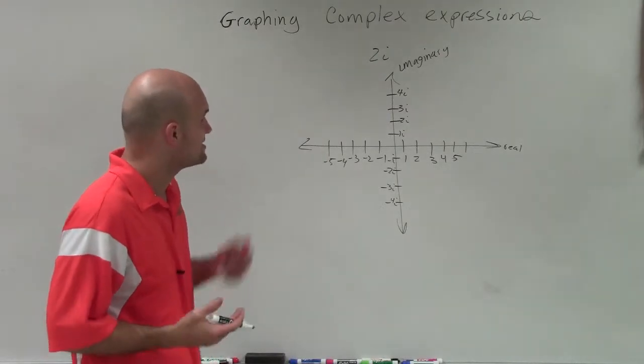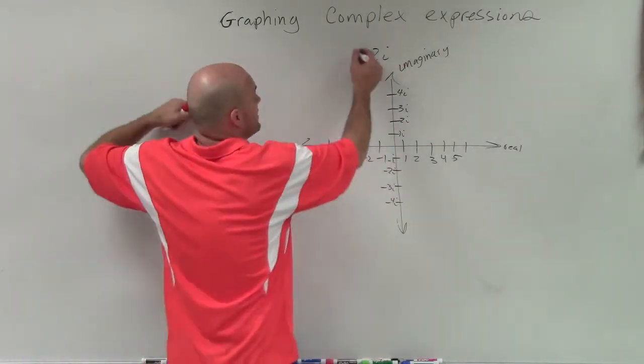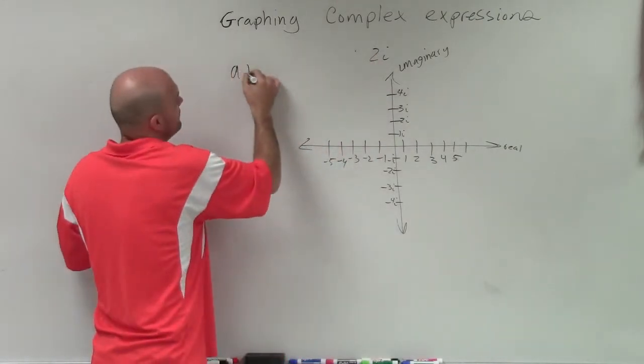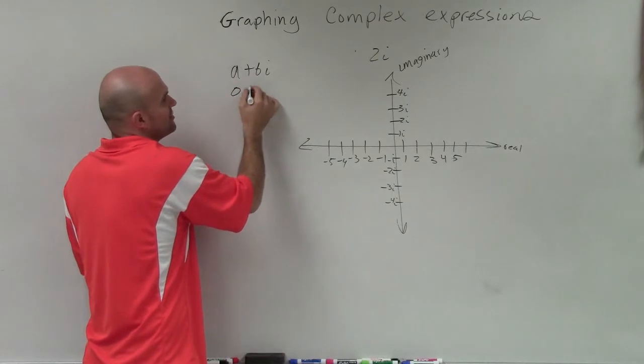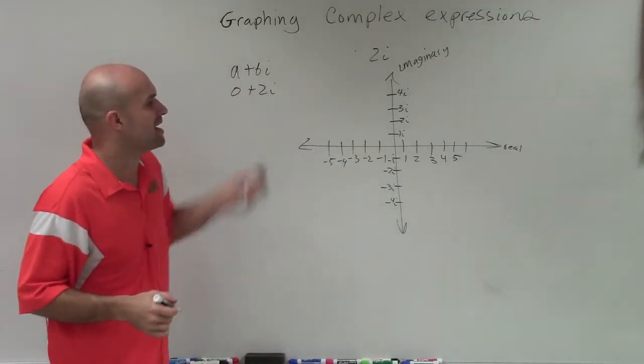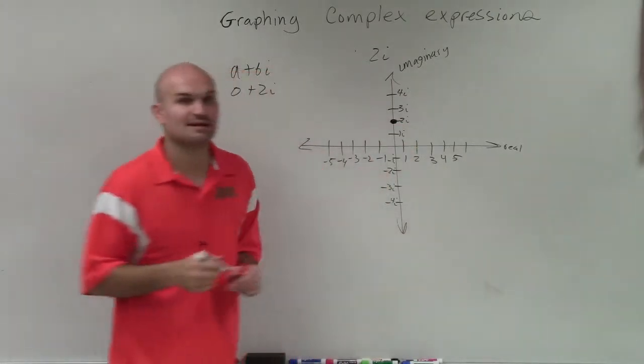So to go and take a look at this, if I just want to plot 2i, I notice that there is no real component, right? Remember, all complex numbers come in the form of a plus bi. And since there's no a, it would be 0 plus 2i. So I can only plot on my imaginary axis, which is going to be right there.